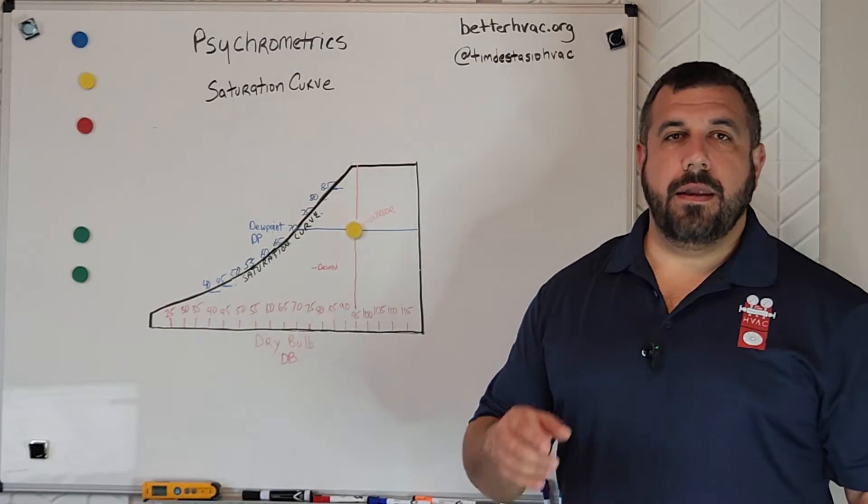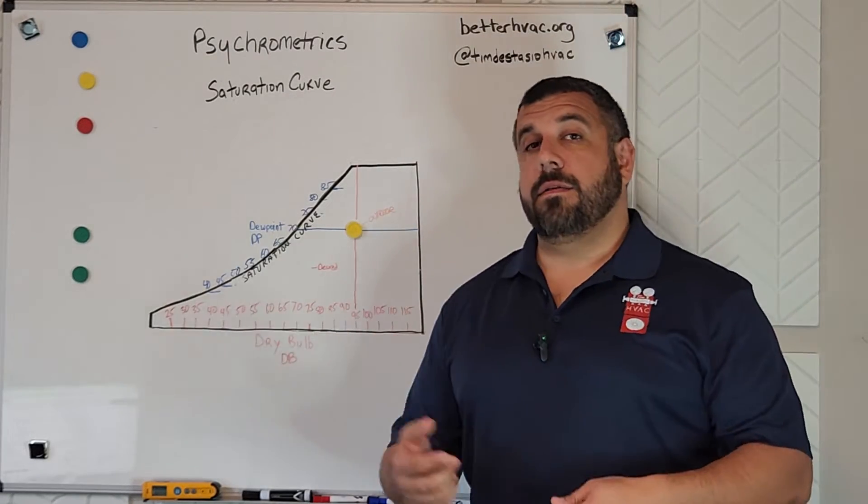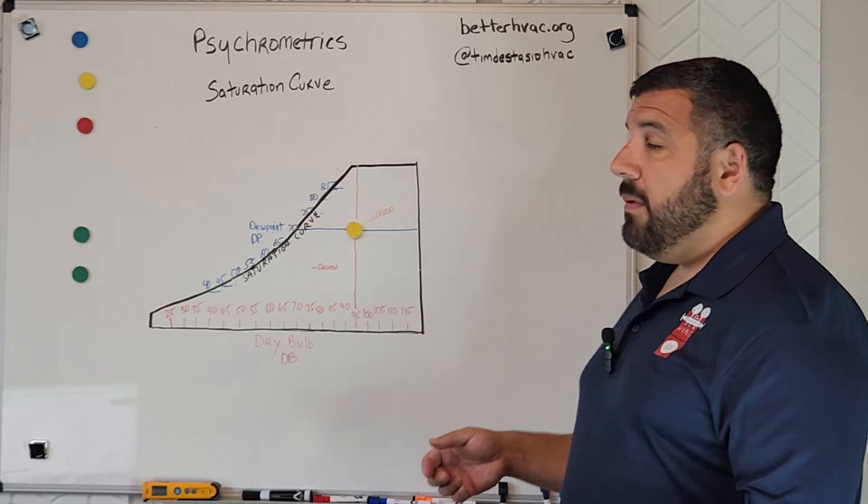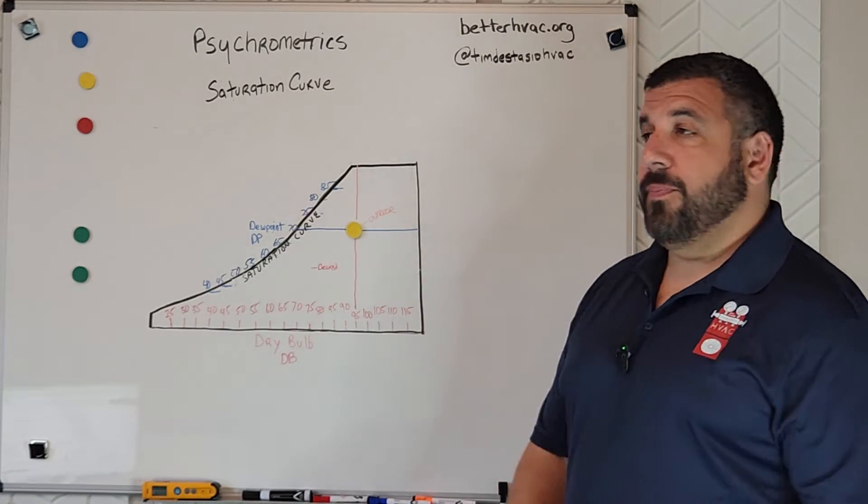Hey, Tim DeStascio here and it's Psychometric Saturday. We're going to continue what we were talking about last time, as in what happens when we need to cool the space down.